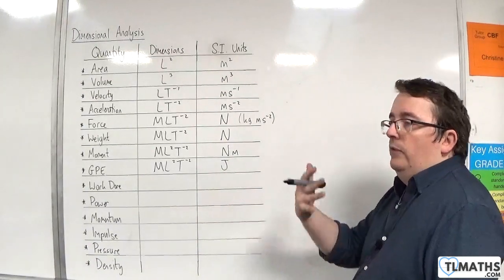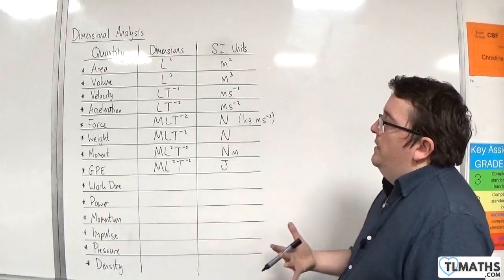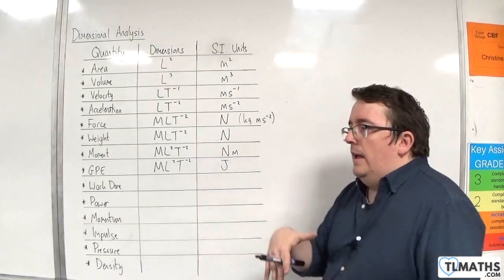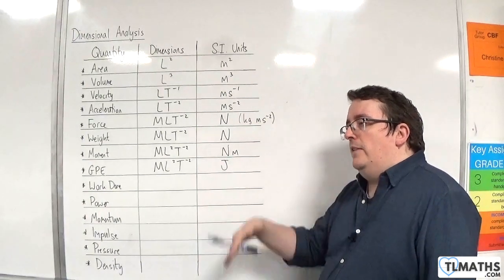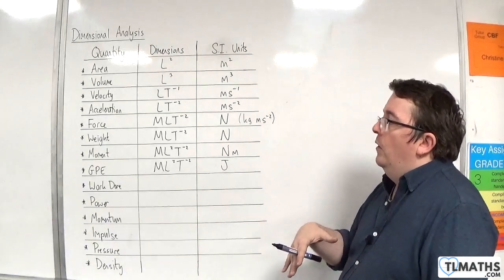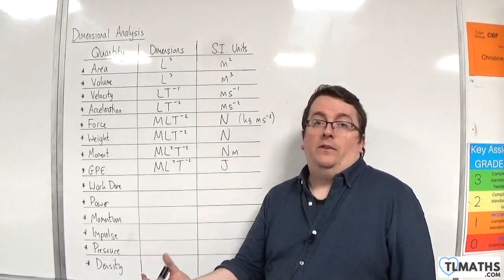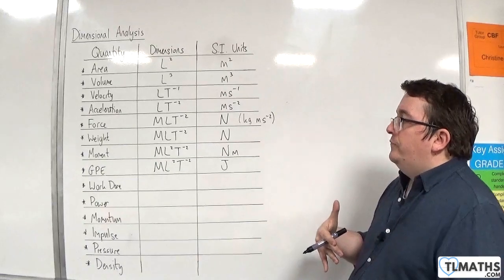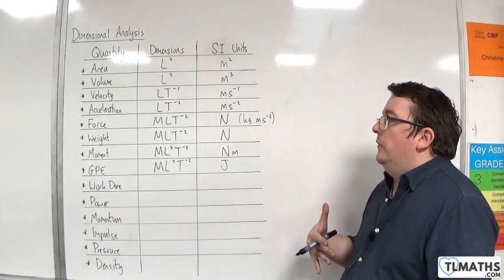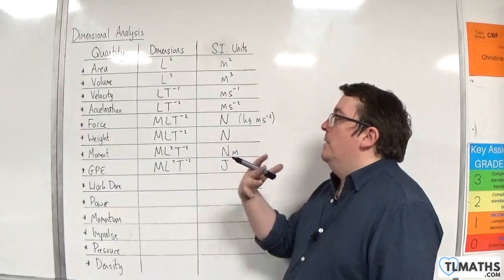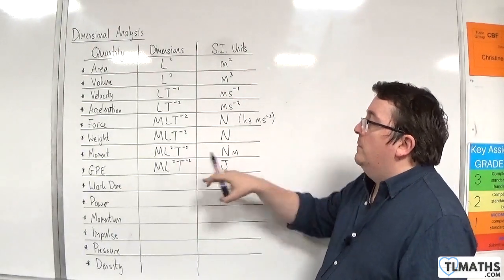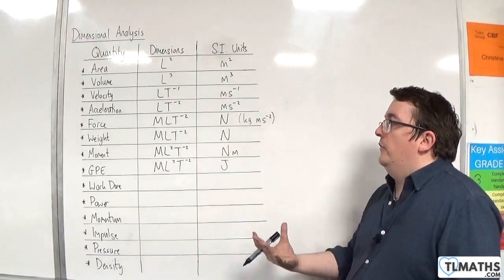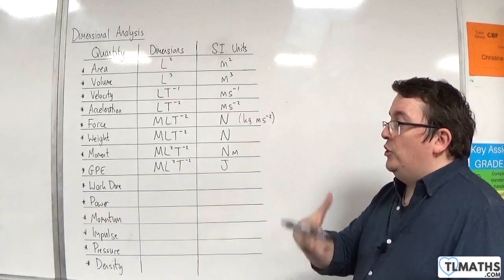This raises an interesting problem, because the dimensions of a moment and GPE are the same, but their units are different. Although the dimensions are the same, one is treated as a vector and the other isn't — moments work with vectors and GPE gives a scalar. So engineers keep moments in newton metres and energy in joules.